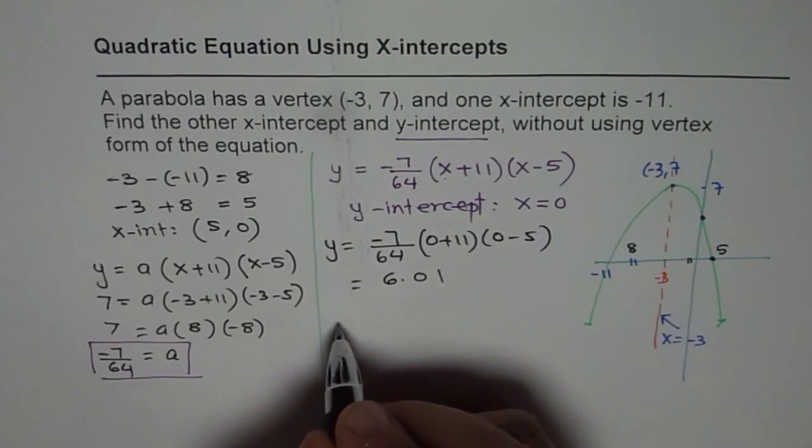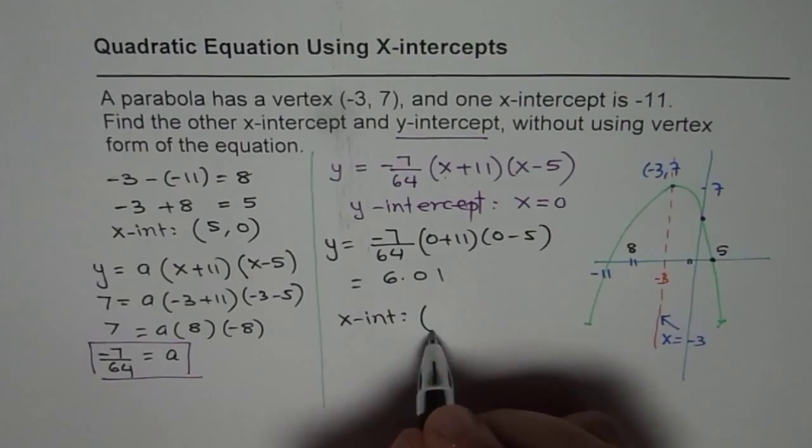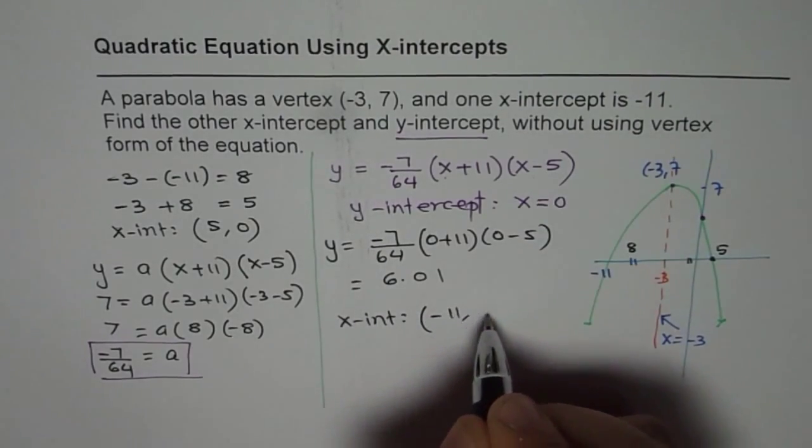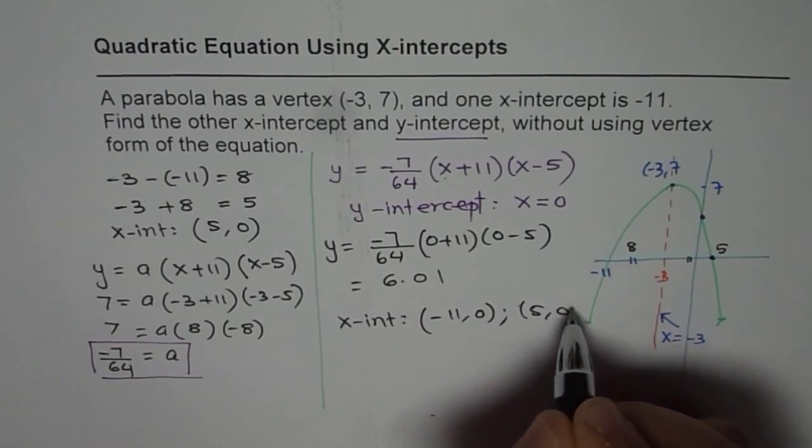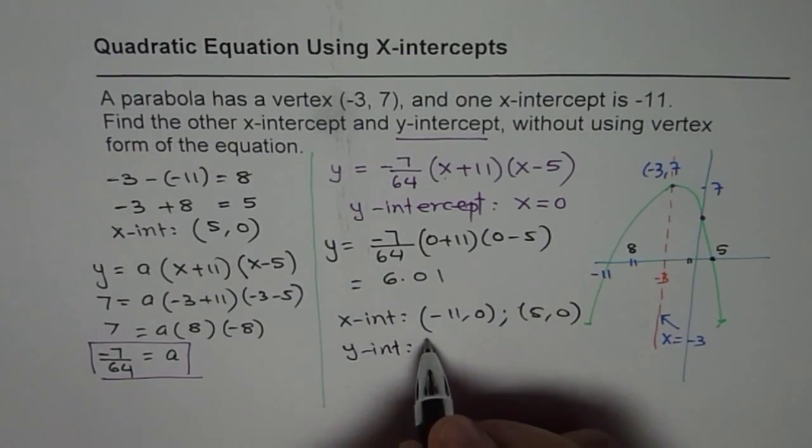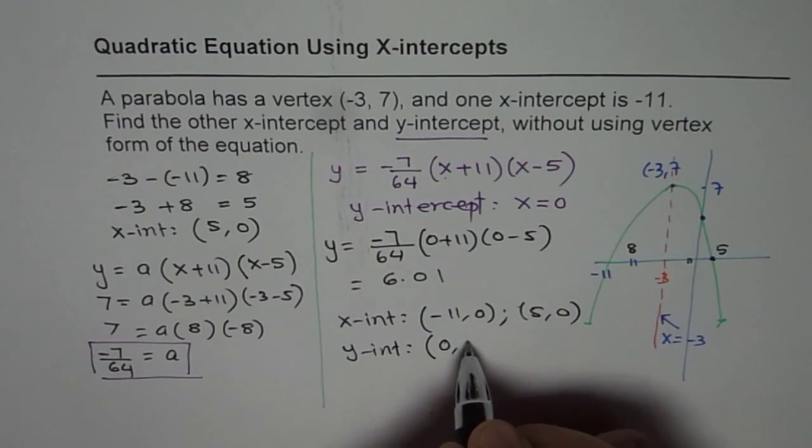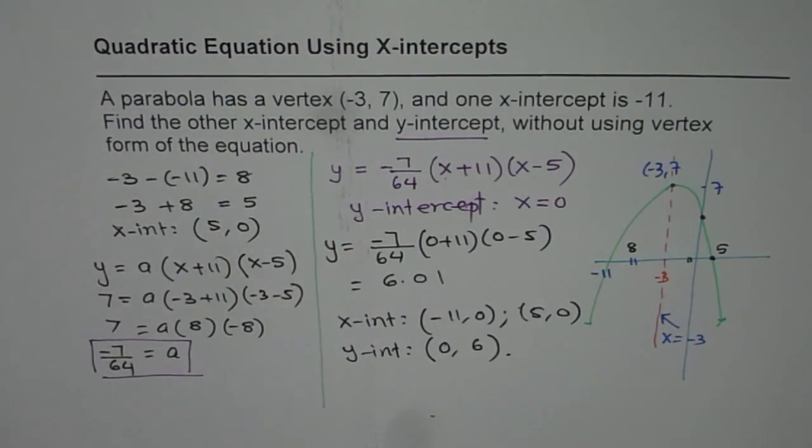So now we can write down our answer that x-intercepts are at, 1 is given to us, (-11, 0). The other one we calculated, (5, 0). Y-intercept is actually at (0, approximately 6), correct? So that is how we can answer this question. I hope you understand and appreciate the concept.